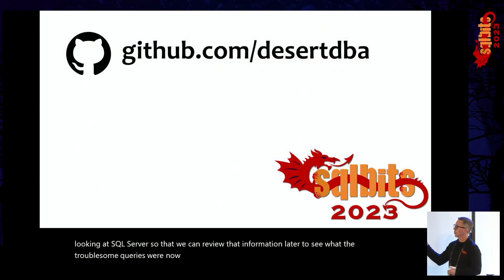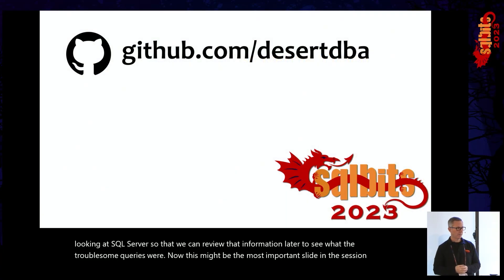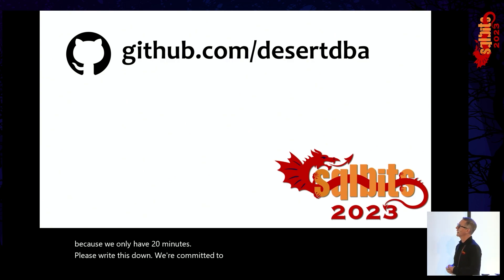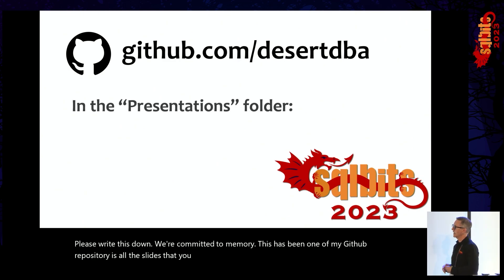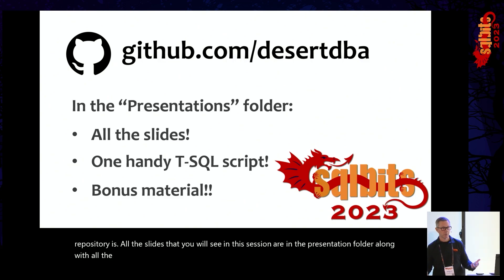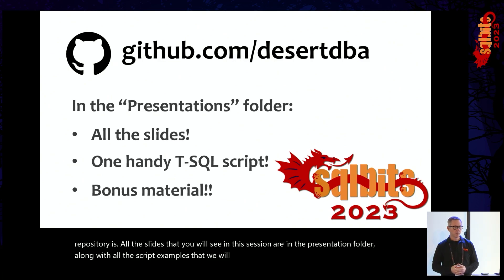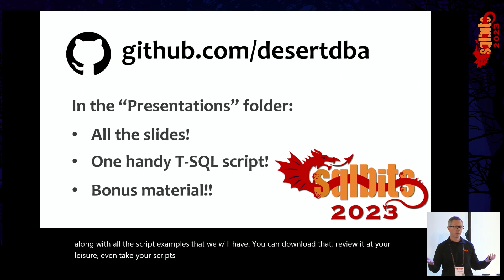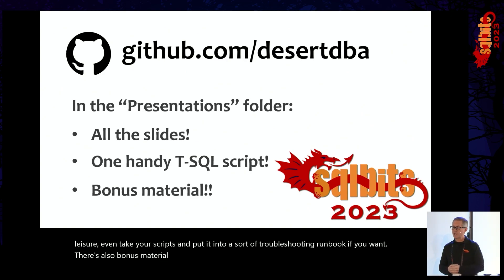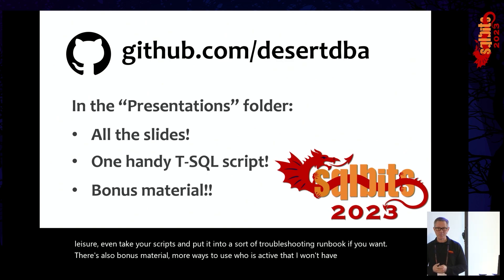This might be the most important slide in the session because we only have 20 minutes. Please write this down or commit it to memory. This is where my GitHub repository is. All the slides you will see in this session are in the presentation folder, along with all the script examples. You can download that, review it at your leisure, even take the scripts and put them into a troubleshooting runbook. There is also bonus material — more ways to use Who Is Active that I won't have time to cover in 20 minutes.